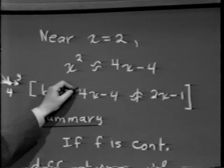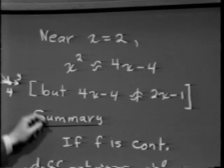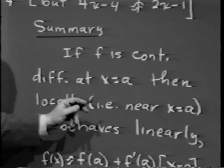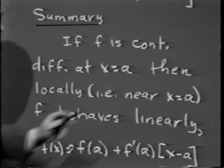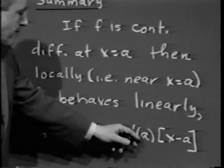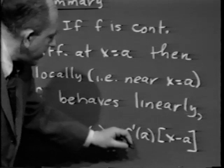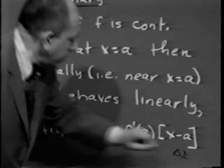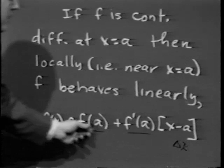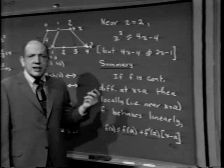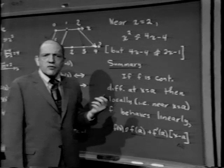In summary: if f is continuously differentiable at x equals a, then locally — meaning near x equals a — f behaves linearly. In other words, f(x) is approximately f(a) plus f prime of a times the quantity x minus a. Once x equals a is chosen, f prime of a and f(a) are numbers; delta x is the only variable on the right-hand side. So f(x) is a linear function of delta x. Since all of this is review, the more interesting point is that we can extend this result to several variables.